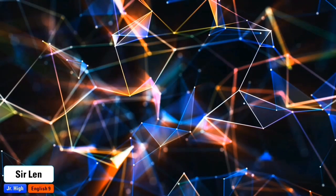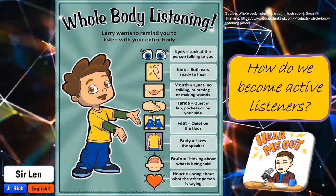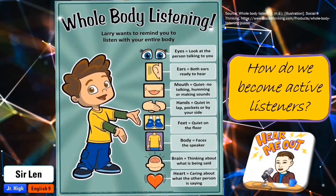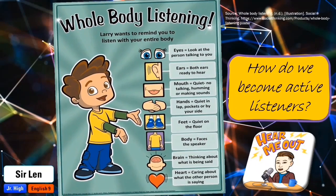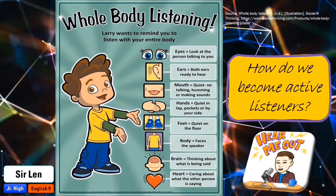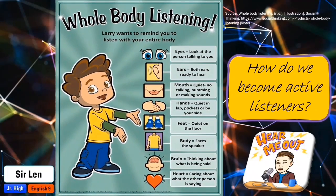How do we become active listeners? We must use whole-body listening: eyes looking toward the speaker, both ears ready to hear, mouth quiet and ready for your turn to talk, hands quiet and kept to yourself, feet quiet and still, body facing toward the speaker, brain thinking about what is being said, and the heart considers the speaker and others listening.